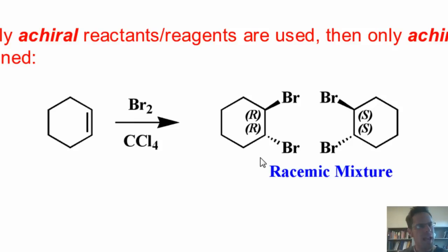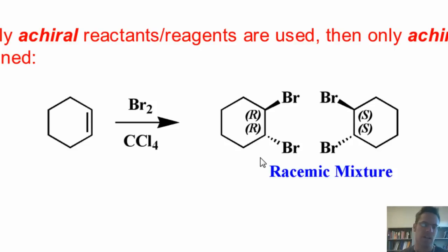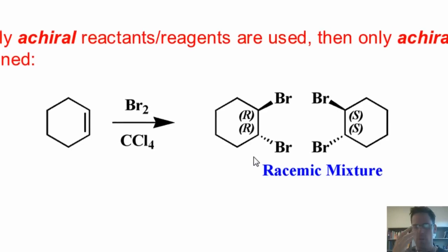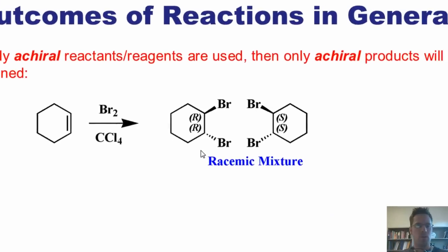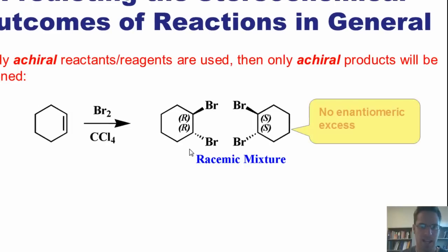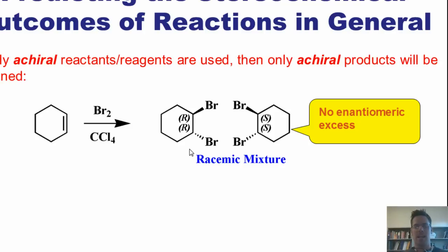If I throw all achiral reagents into a reaction, I will get all achiral products out the other side. We would often report our results by saying that we would have no enantiomeric excess — that is, no excess of one enantiomer relative to the other.